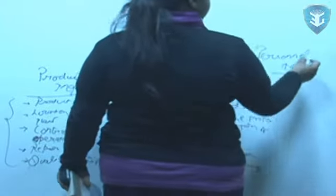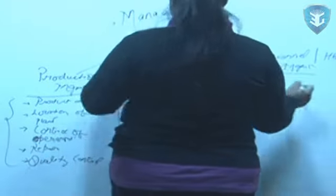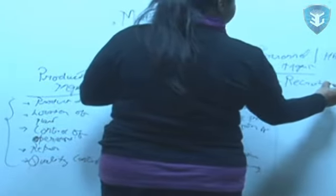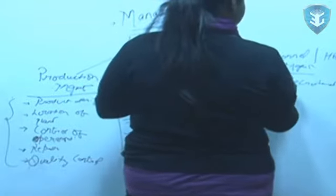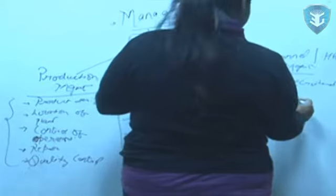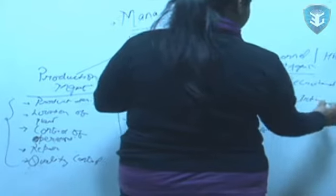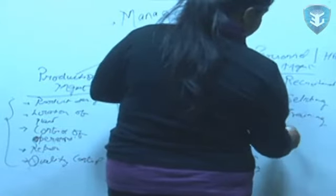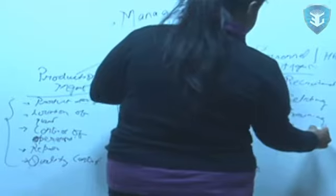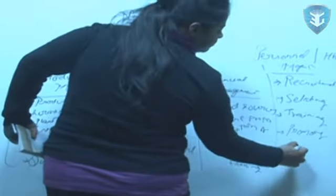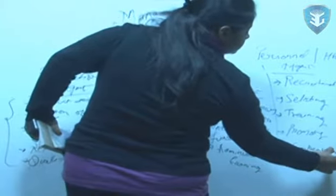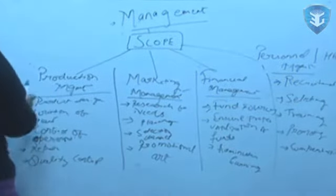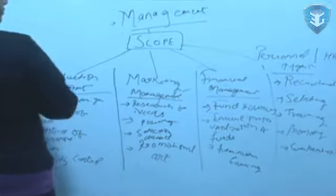Coming to personal management, it is also known as your human resource management. It involves your recruitment means calling people to apply for the job, then finally selecting, then you need to train them, promote them and finally their compensation. So all this makes the scope of management very clear which can be categorized into production, marketing, finance and human resource.